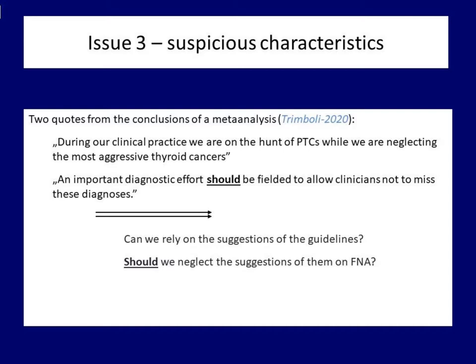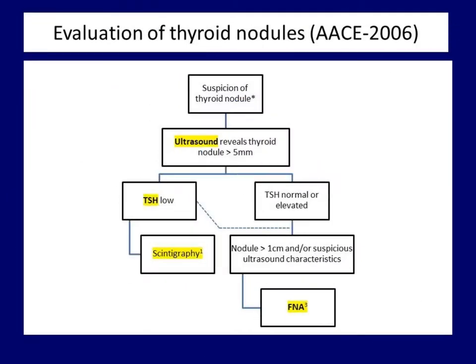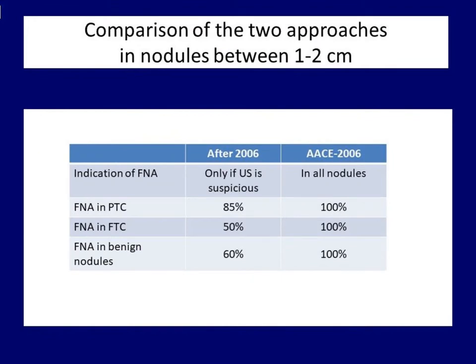The answer to this question fundamentally influences our everyday practice. For comparison, here is the simplified version of the algorithm which was generally accepted and used earlier: FNA was required in all nodules larger than 1 cm in maximal diameter, with analysis of ultrasound characteristics influencing the FNA decision only in subcentimeter nodules. This table compares the two approaches. The only relevant difference affects nodules between 1 and 2 cm in maximal diameter. In this cohort, there is a significant proportion of cancers which will be missed if we apply recent suggestions — up to 50% of follicular cancers.